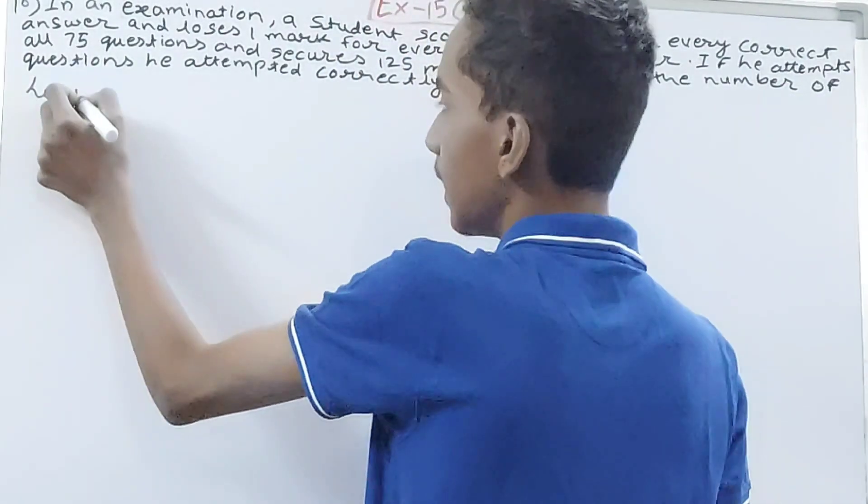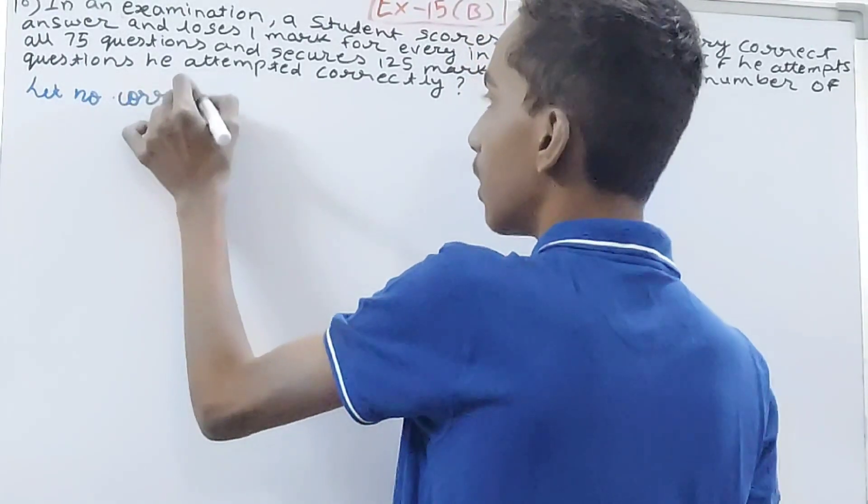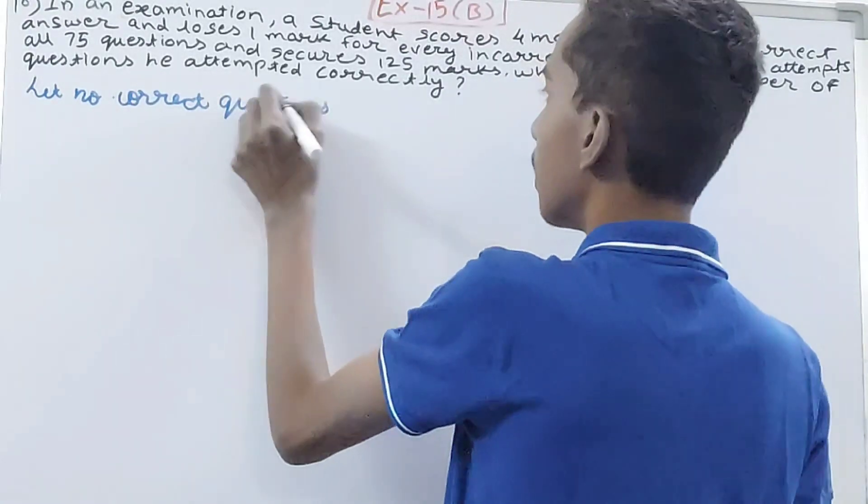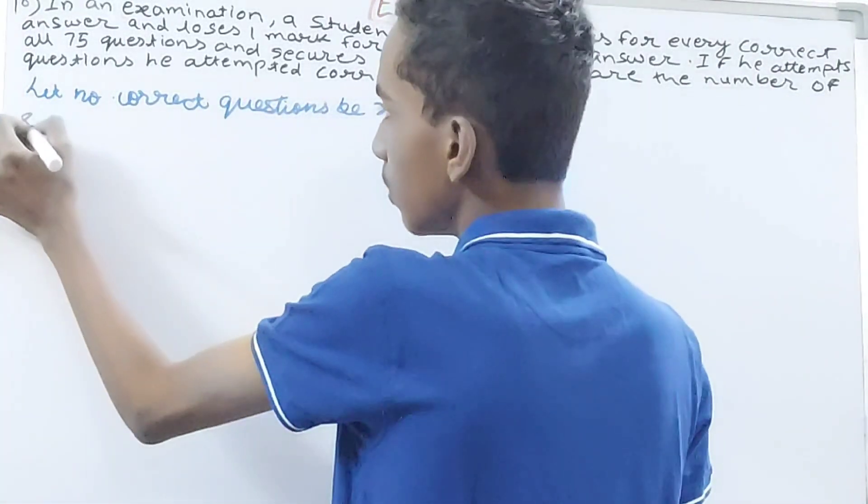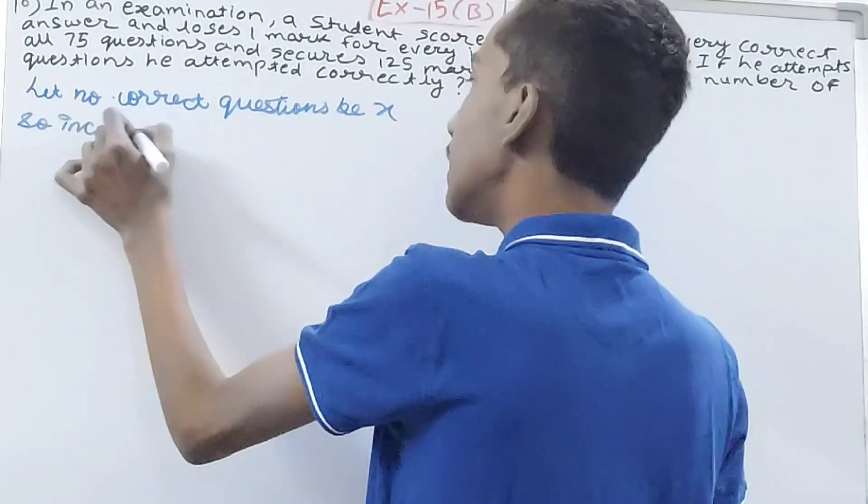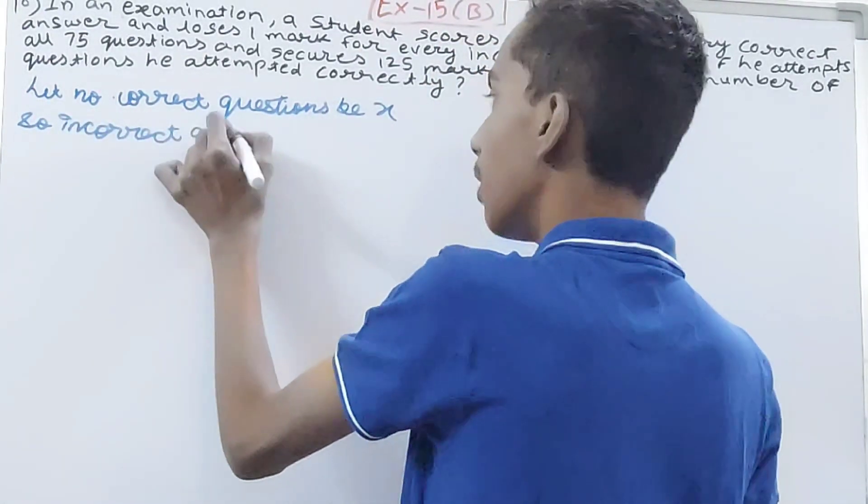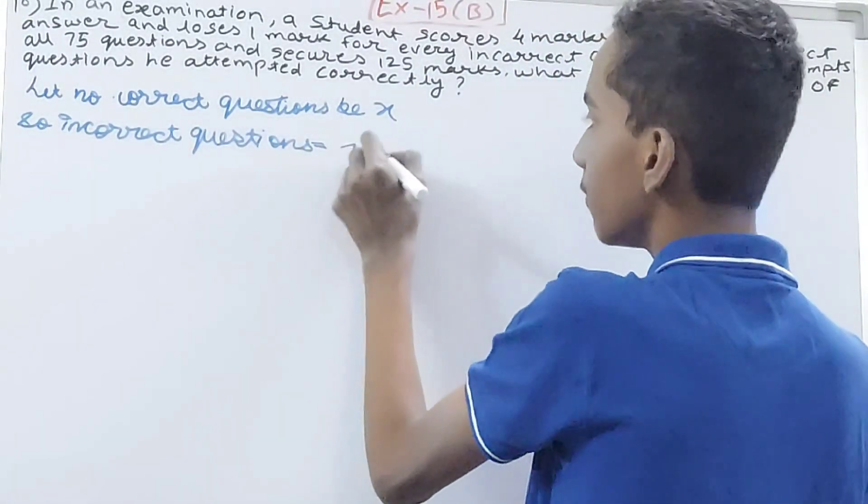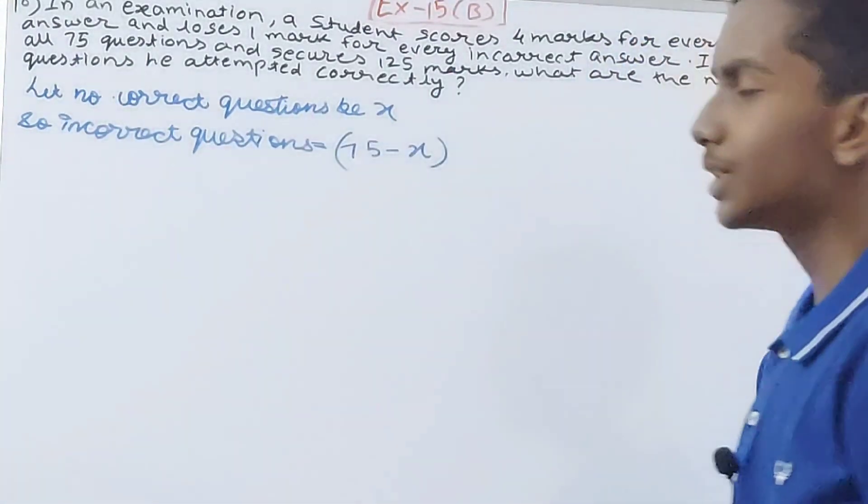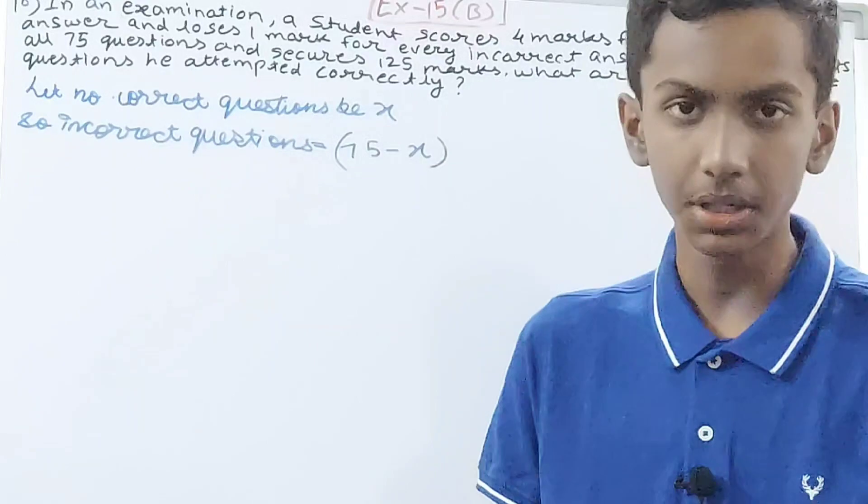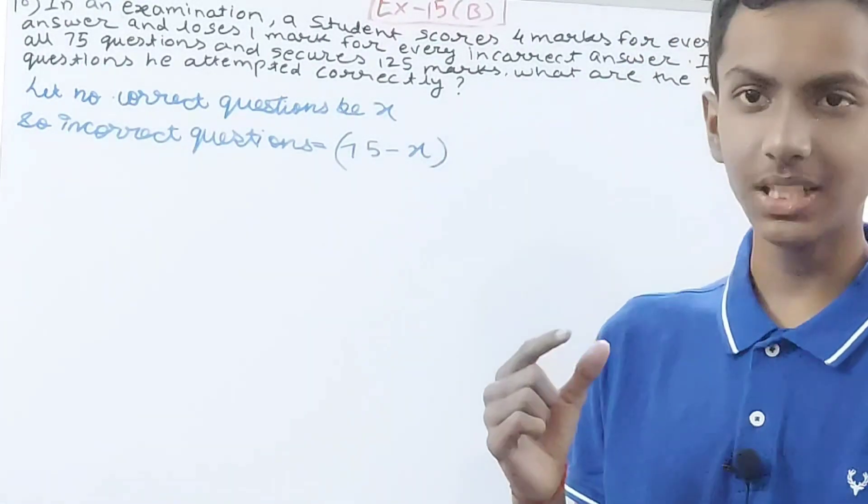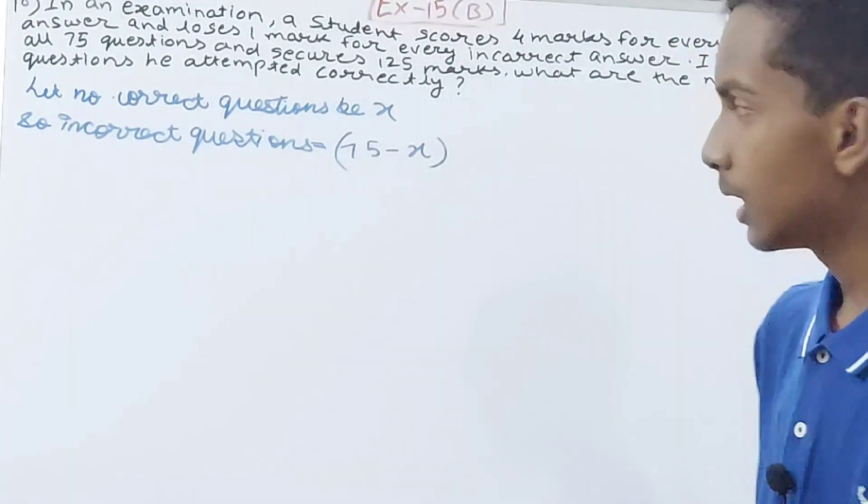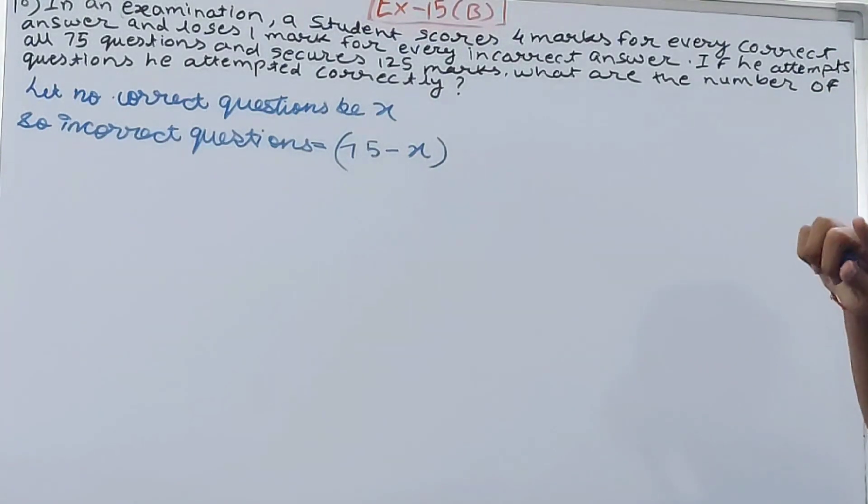Now it says he scores four marks for every correct answer and loses one mark for every incorrect answer. So if the number of correct questions is x, then the marks from correct questions—